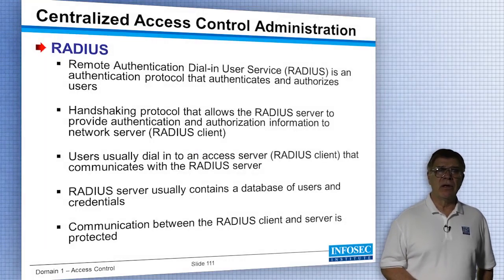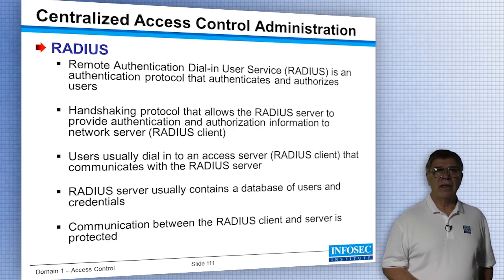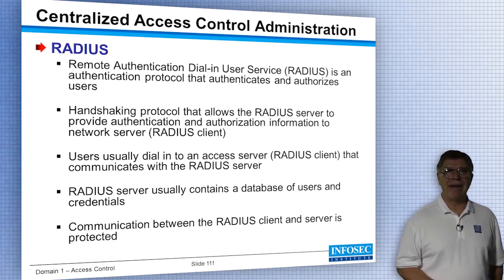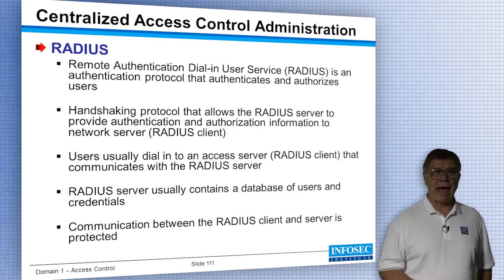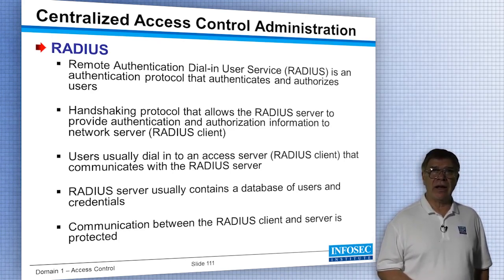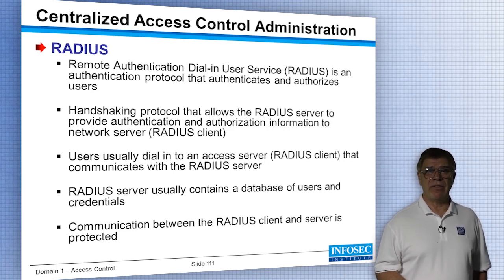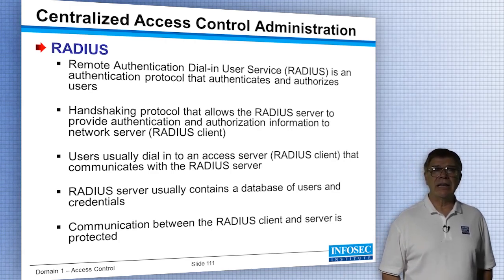Let's look at RADIUS as an example. Don't be confused by the name Remote Authentication Dial-In User Service — it used to be used when modems and serial line interface protocol were in place, but it's still in use today. It is a handshaking protocol that allows the RADIUS server to provide authentication and authorization information to the network server, the RADIUS client. The RADIUS server contains a database of users and credentials, or may be configured to give access to another LDAP (Lightweight Directory Access Protocol) server. For example, your RADIUS server could be configured to access Active Directory in Windows. Communication between the RADIUS client and server must be protected.